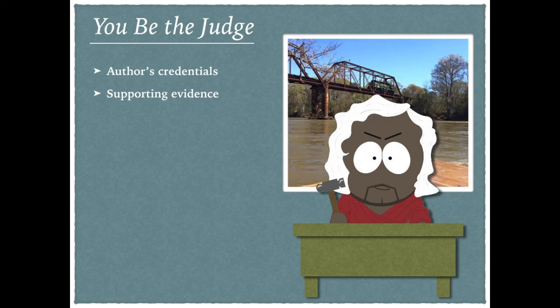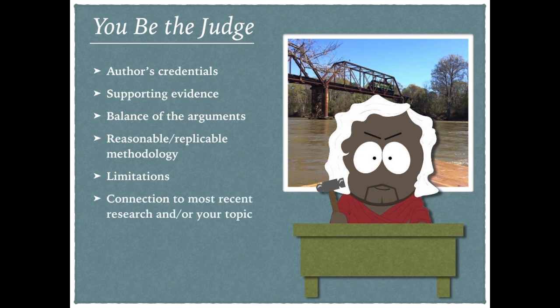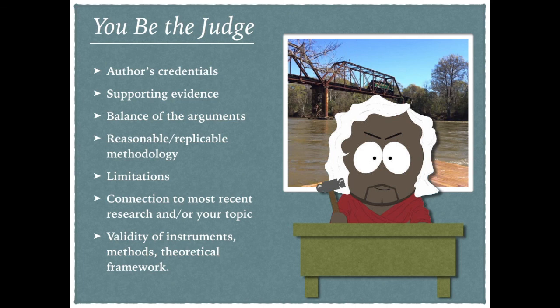Look at the evidence provided in the article and decide whether it supports the researcher's claims. Perhaps the connection is too vague, or maybe it's not logically sound. Are the arguments clearly represented and well-balanced? You want to look at that both in terms of a single article and how the articles work among each other. Could you replicate the research based on the method provided? Does it seem to be a reasonable method? Does it have any flaws? Check out the stated limitations and see if you can identify any others. Connect the findings to the most recent research or your proposed focus. Also consider the validity of the instruments, methods, and theoretical framework — they might be fine, but they might also be outdated or insufficient for the particular proposal.